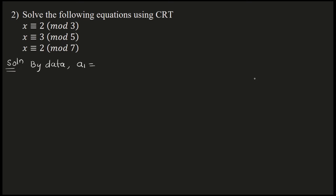By data: a1 is 2, a2 is 3, a3 is 2. And m1 is 3, m2 is 5, m3 is 7. We are given with this data.